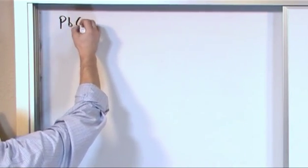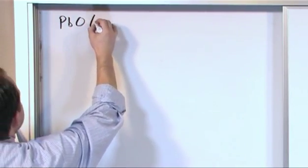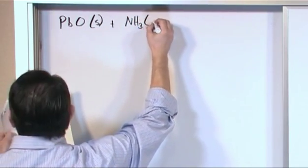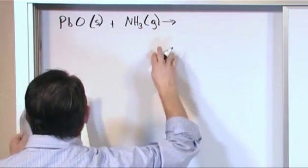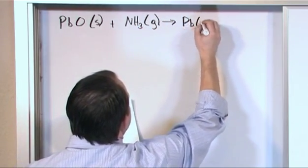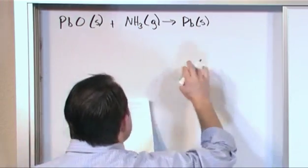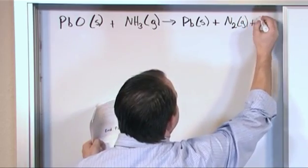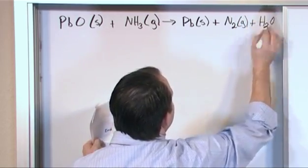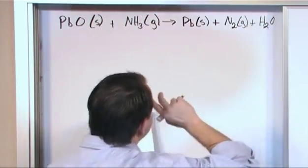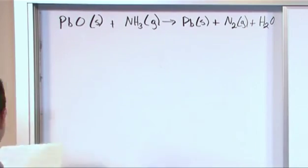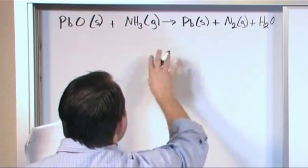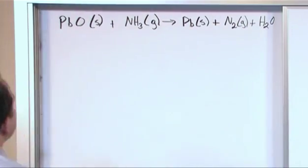Let me put a reaction up on the board. It's PbO, so that's lead oxide, that's a solid, plus NH3, and that's a gas, and that yields Pb, which is lead, that's a solid, plus N2, that's a gas, plus H2O, and that's a liquid in this case. All right, so we have lead oxide, we have ammonia, we have lead, nitrogen, and we have water.